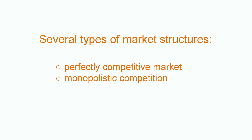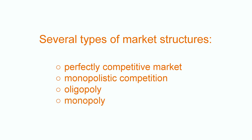If there is a finite number of competitors selling differentiated products, we will talk about monopolistic competition. With few competitors, the rise in market power gives way to an oligopoly. With a single producer, this is a monopoly.